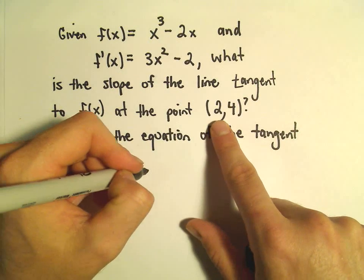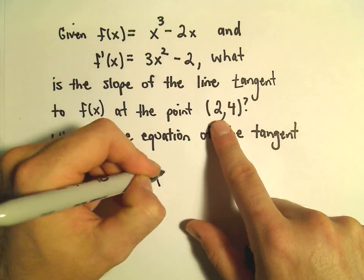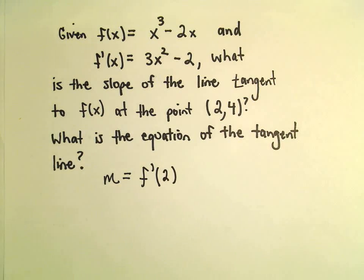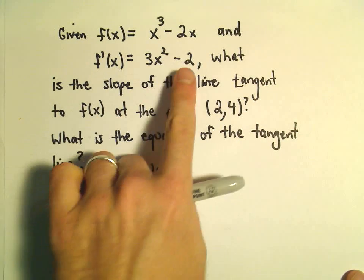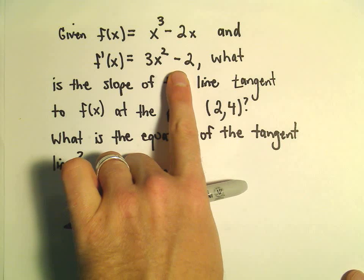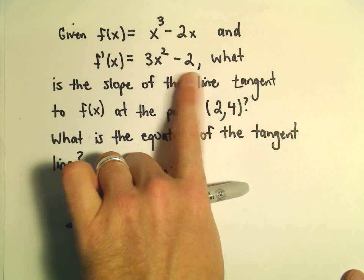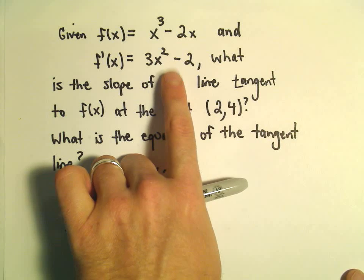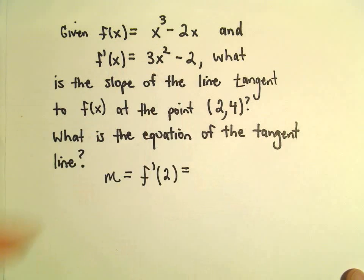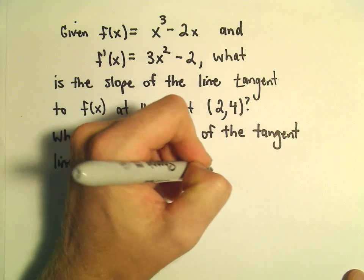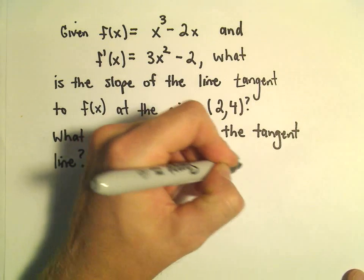So in this case, the slope is going to be f prime of 2. We're plugging in the x coordinate of 2 into our derivative formula. That's what the derivative will do - it tells you the instantaneous rate of change, or in terms of a graph, it tells you the slope of the tangent line. So we'll just get 3 times 2 squared minus 2.